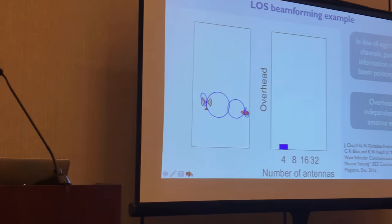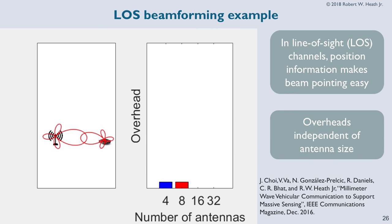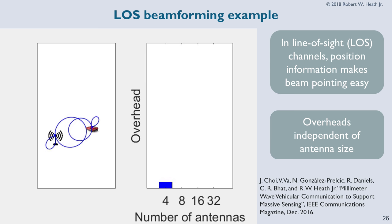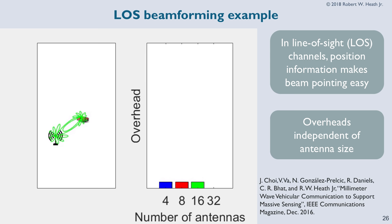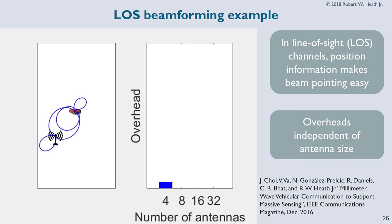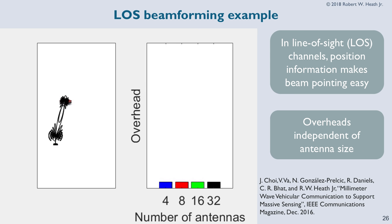That would work really well in free space. The amount of overhead is low — the car just tells the base station where it is, or the base station figures it out from other information. For relatively large antennas, as long as your position information is accurate enough, you can point the beam well. You don't have to try all the possibilities. Even for large antennas, the overhead is really minimal — until you get to really small pencil beams and hit GPS inaccuracy.